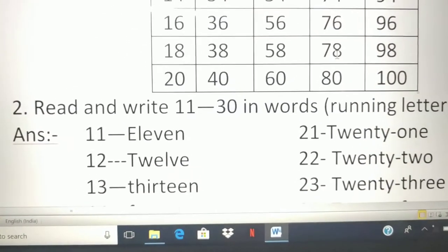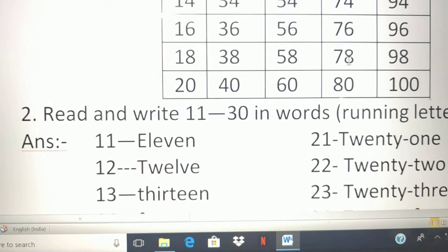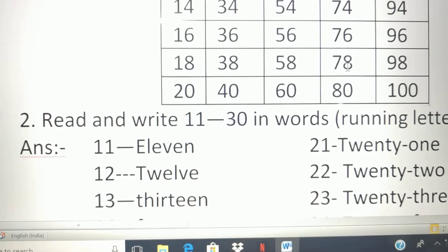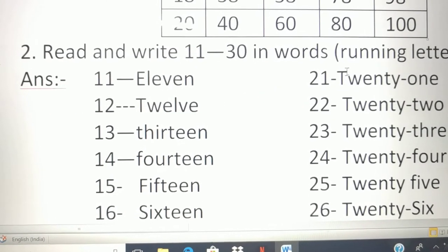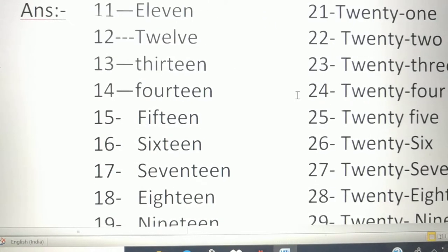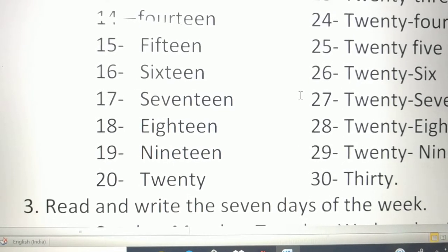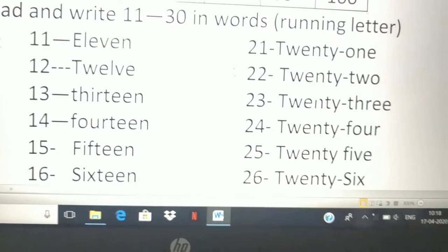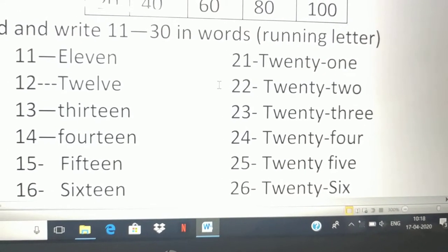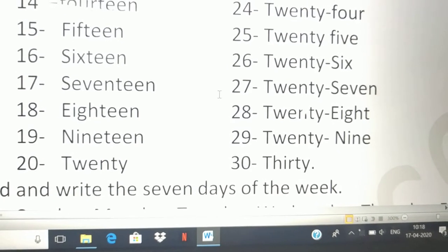The next question number 2, read and write 11 to 30 in word running letters. 11, 12, 13, 14, 15, 16, 17, 18, 19, 20, 21, 22, 23, 24, 25, 26, 27, 28, 29, 30.